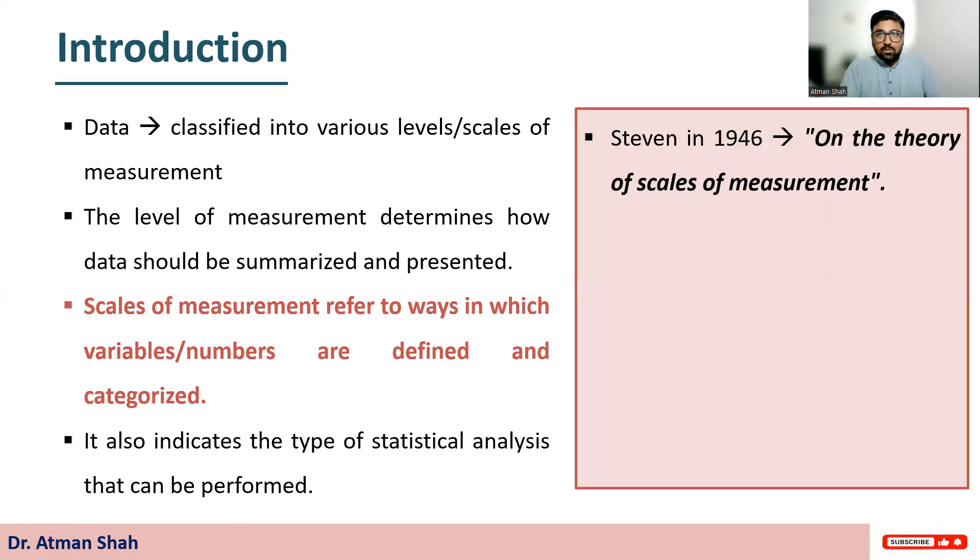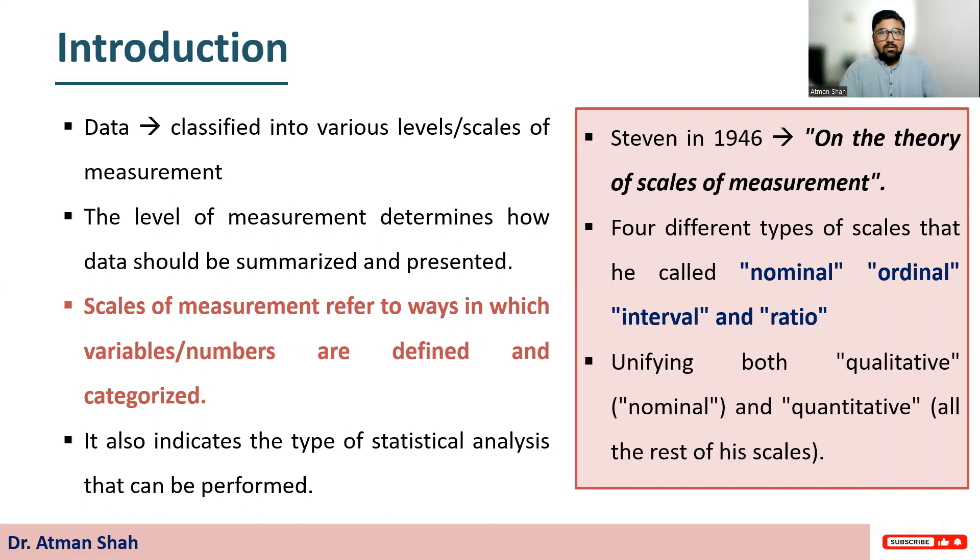Now, Steven in 1946 defined these four categories in the article named on the theory of scales of measurement. So we defined four different types of scales: nominal, ordinal, interval and ratio. And these four types of scales include qualitative and quantitative data.